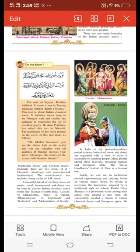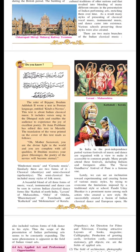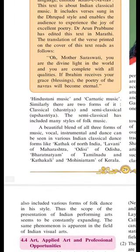There are two main branches of Indian classical music. The first branch is Hindustani music and the second is Carnatic music. Similarly, there are two forms of each: Number 1, Classical — that means Shastriya — and Number 2, Semi-classical — that means Upshastriya. So these two forms are described here.